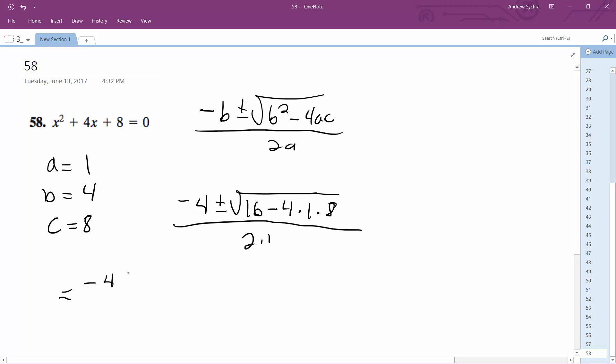So we end up with negative 4 plus or minus square root of 16 minus 32, which is negative 16, all over 2.